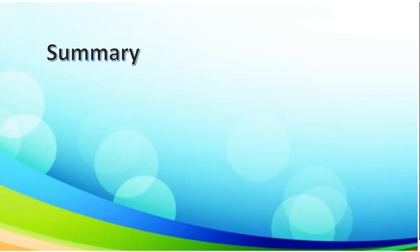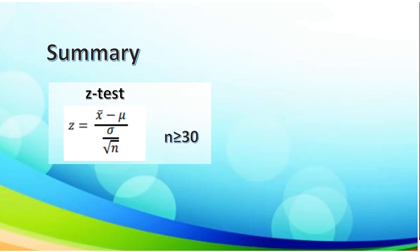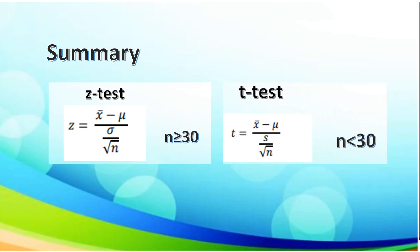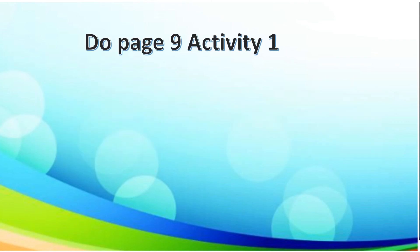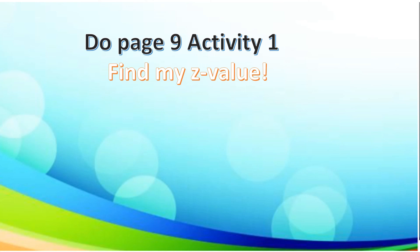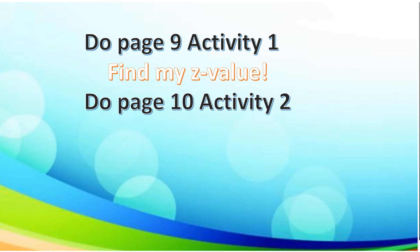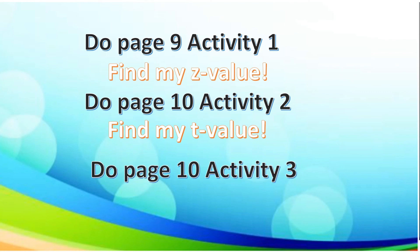For our summary, we have discussed the two test statistics: Z-test, which is used when the given sample is greater than or equal to 30, and T-test when the given sample is less than 30. Now, you may open your module on page 9, Activity 1 titled 'Find my Z-value,' which asks you to find the computed Z-value, write your answer to the nearest thousandths, and show your solution. For Activity 2, page 10, entitled 'Find my T-value,' compute the T-value, write your answer to the nearest thousandths, and show your solution. And for Activity 3, page 10, entitled 'Compute Me,' solve the following and write your answer to the nearest thousandths.